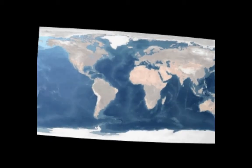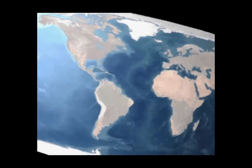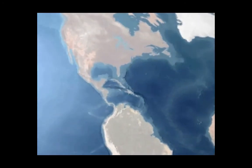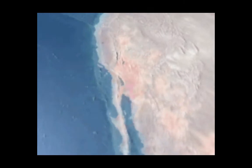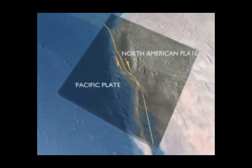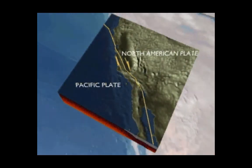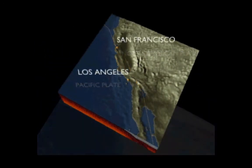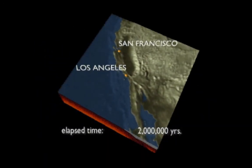In oblique slip plate margins, such as the western coast of North America, one plate moves laterally past another, resulting in strike-slip faults. Crust is neither created nor destroyed in this type of plate margin. The San Andreas fault system is a typical manifestation of this kind of plate margin.